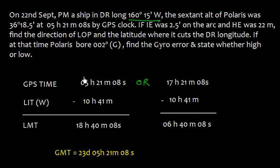To subtract, we need one day difference. We take 24 plus 5, which equals 29, then subtract to get 18 hours, giving us 06 hours 40 minutes and 08 seconds LMT. The date mentioned is 22nd September, so if LMT is 22nd, GMT must be 23rd.